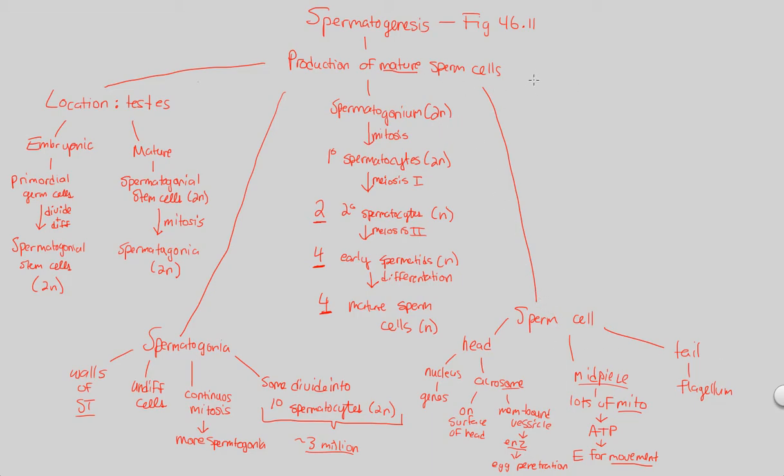Now, we've covered this in about 15 to 20 minutes. In reality, the maturation of sperm, the spermatogenesis, actually takes about 65 to 95 days. This is a very long process.